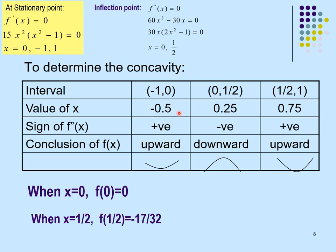Let's see another example. Using the second derivative test, find the relative extremum of this function. First, find the critical values via the first derivative, then set it equal to 0. We get x = −2 and x = 4. Then find the second derivative and substitute x = −2, getting −18, which is less than 0 (relative maximum). Substituting x = 4 gives 18, which is greater than 0 (relative minimum).